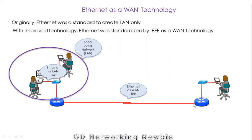In our previous video we discussed that if we want to connect two points which are far away from each other, a leased line was an option. But in addition to leased lines, we also have Ethernet as an option to create a Wide Area Network.